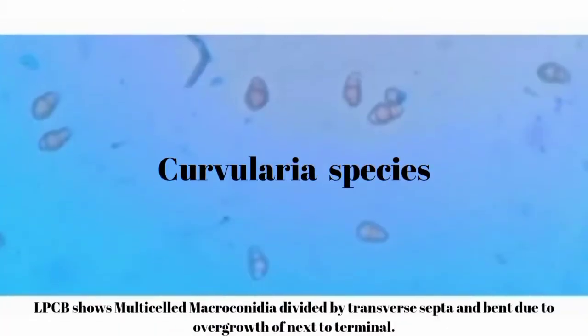Next one is Curvularia species. Macroconidia of Curvularia species are easy to recognize, having 4 to 5 cells which are separated by transverse septa. Curvularia species is an important cause of phaeohyphomycosis.